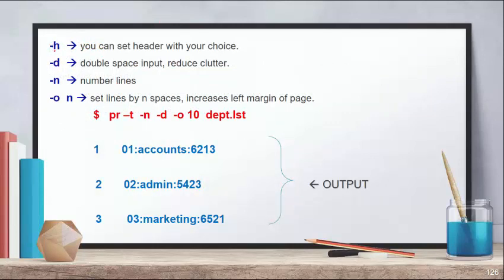The next option is minus H. When you use PR with the minus H option, you can specify your own custom header text. For example, if you want the header to say 'Department List', you use the minus H option and write the header text in double quotes. Similarly, the minus D option, when used with PR, will show double-spaced output — after each value, two lines of space will appear.